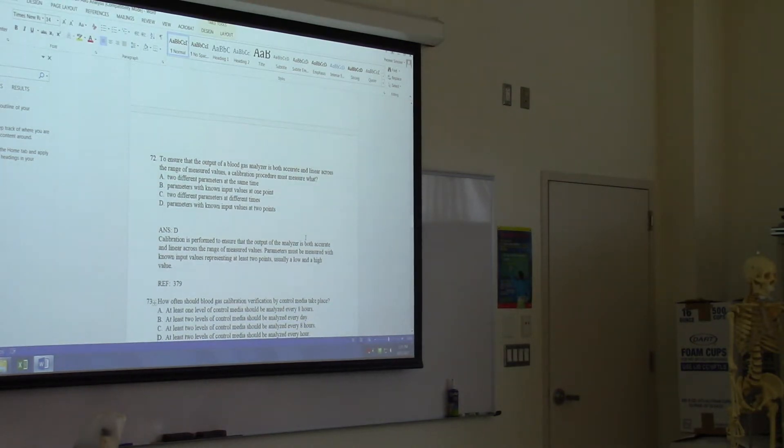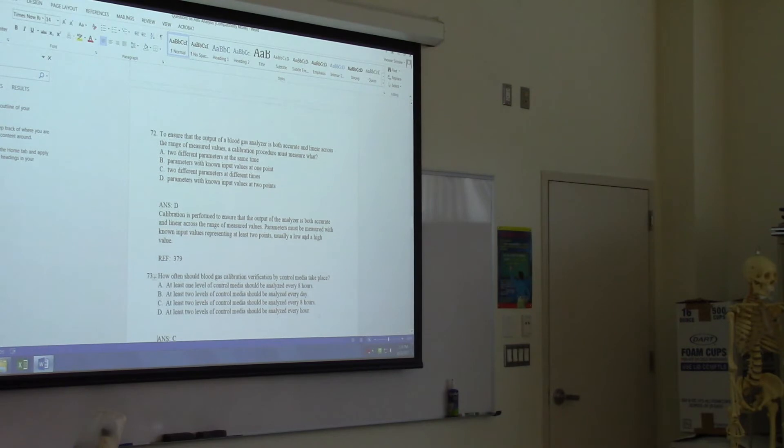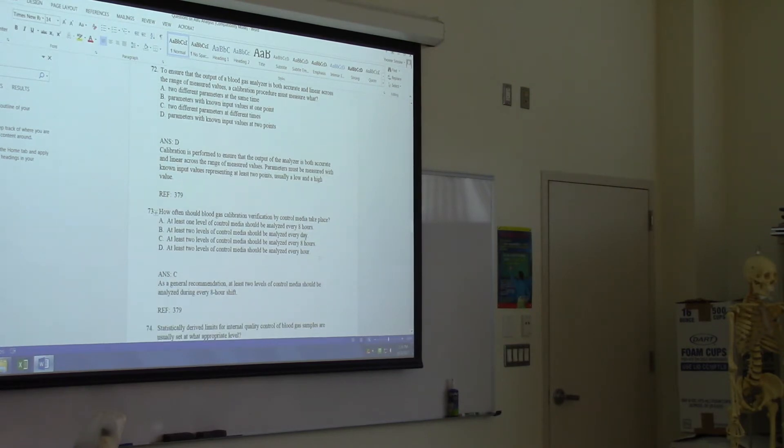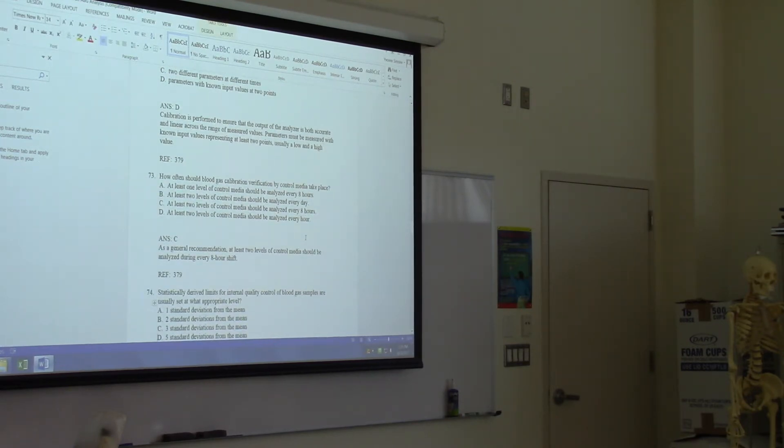How often should blood gas calibration verification by control media take place? Yeah, two levels every eight hours. Statistically derived limits for internal quality control of blood gas samples are usually set at what appropriate level? Two standard deviations.